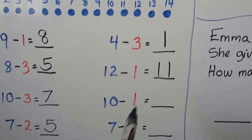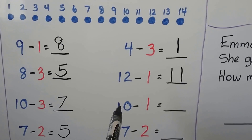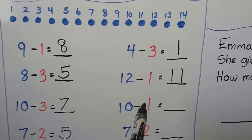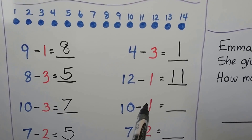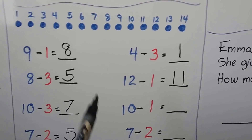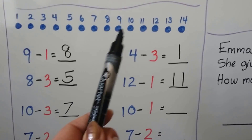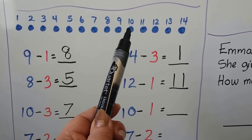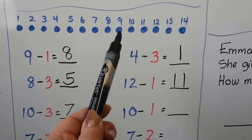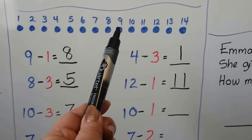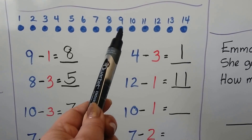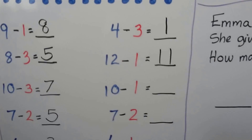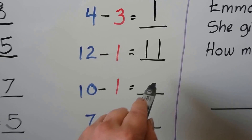10 minus 1. We start at the 10 and take away 1. Count back 1. Where is the 10? Here it is. We count back 1. 10 minus 1 is equal to 9.